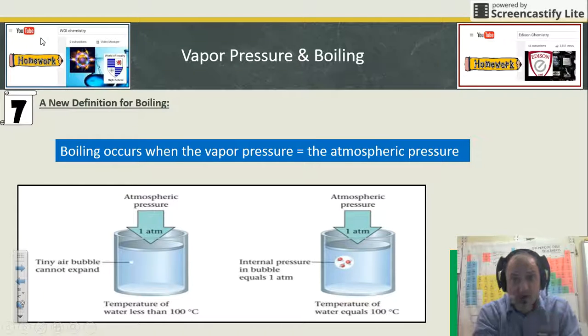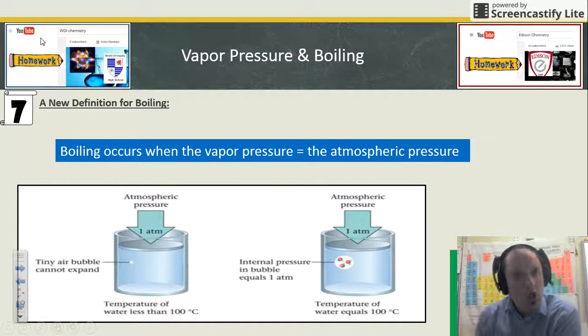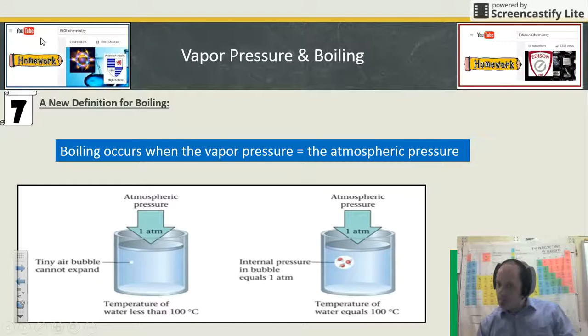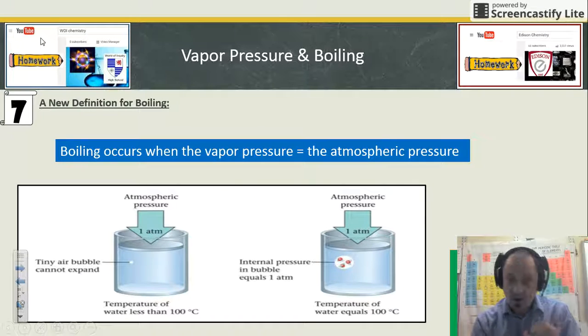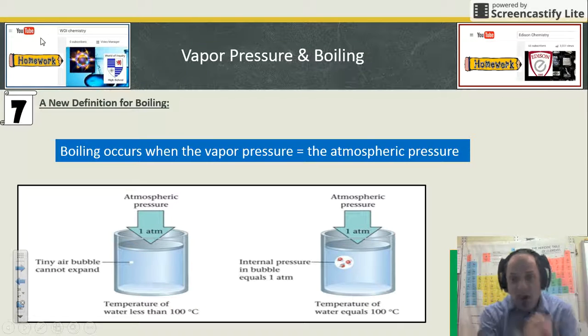A new definition of boiling for you is that when vapor pressure equals the atmospheric pressure pushing down, you get something to boil. There are a few things we could do to manipulate these: we could change the amount of atmospheric pressure, or we could change the temperature of the liquid.